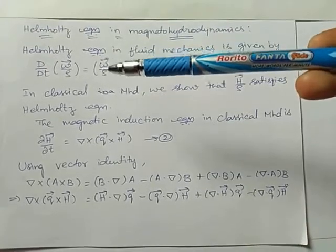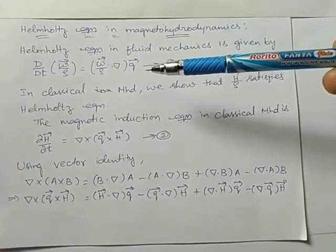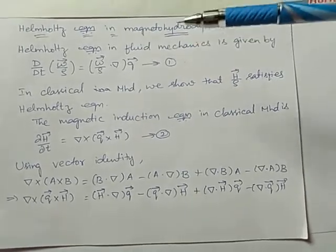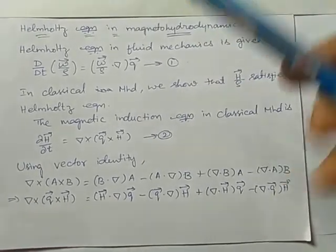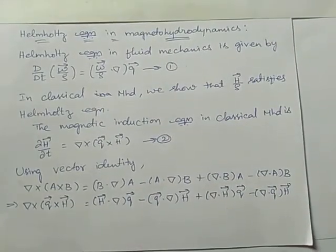d by dt of omega by rho equals omega by rho into del of q. We are going to prove H by rho satisfies Helmholtz equation or not.